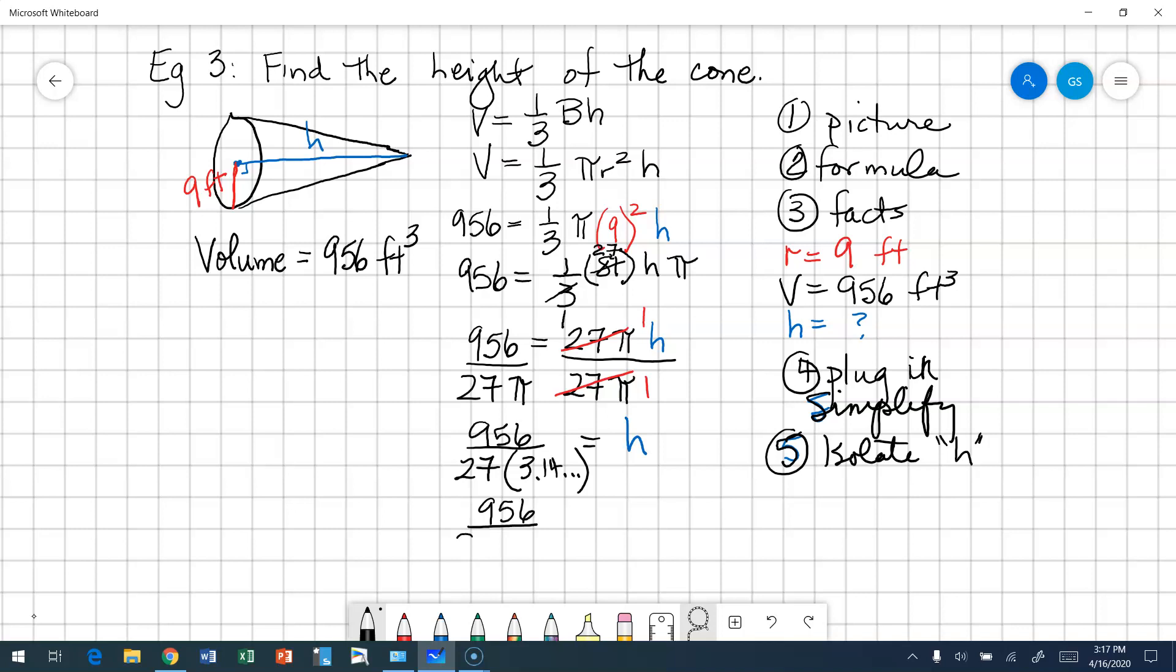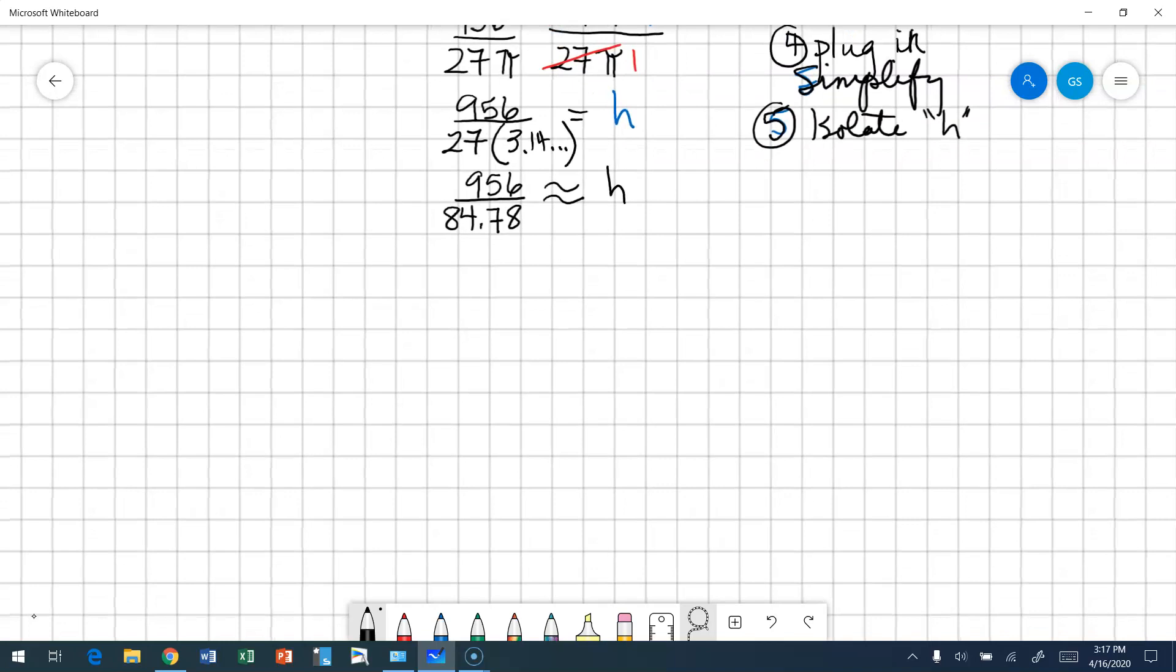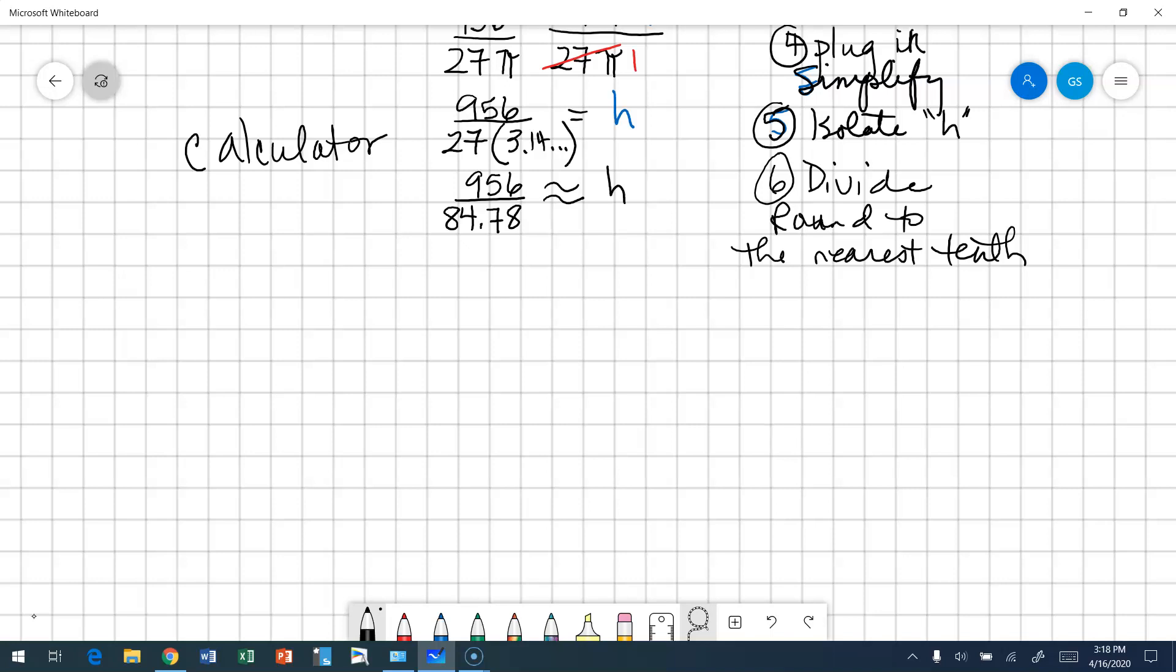956 divided by 84.78. Now, the number is going to be longer in the calculator, is about h. Again, all of this, absolutely it is okay to use your calculator. We are going to divide and round to the nearest tenth. Okay, so 956 divided by 84.78 is about 11.3. And now we need our units. So therefore, the height is about 11.3 feet.